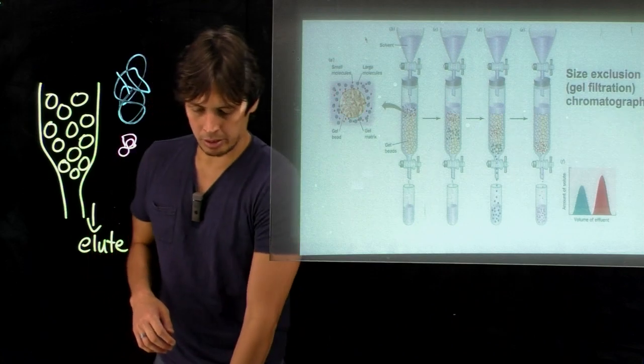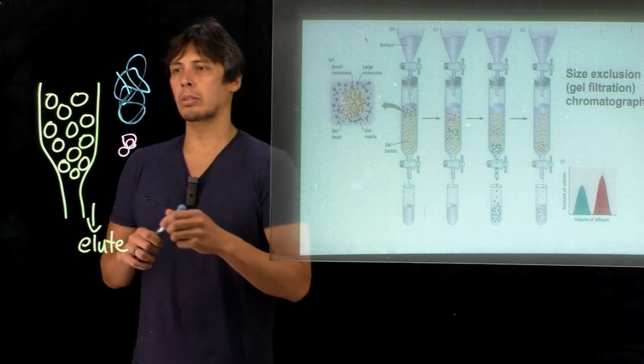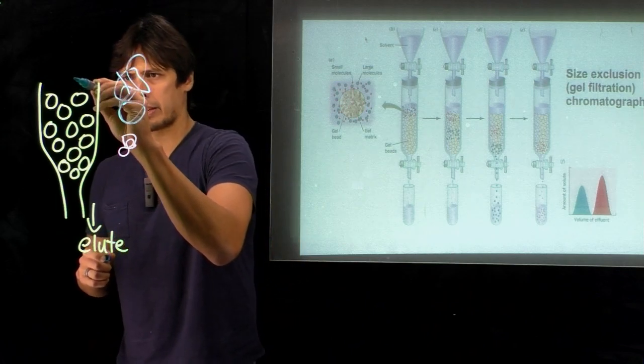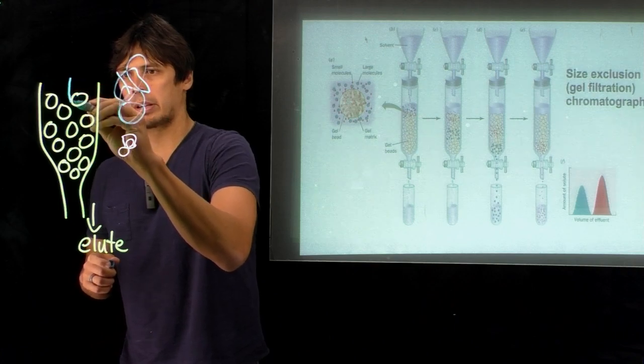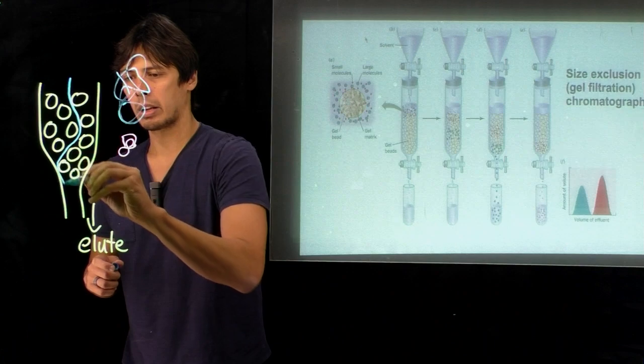The way this separates is that larger proteins that can't enter these tunnels will travel through the column faster. Since they can't enter the beads, they'll simply travel between the beads and out.